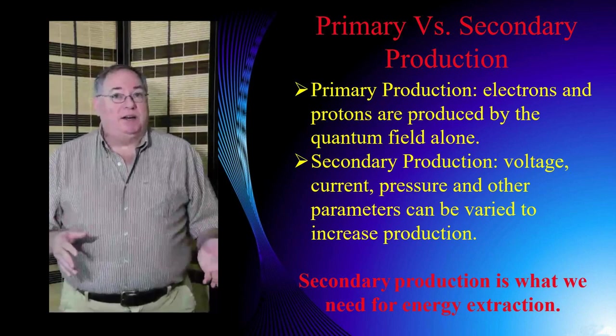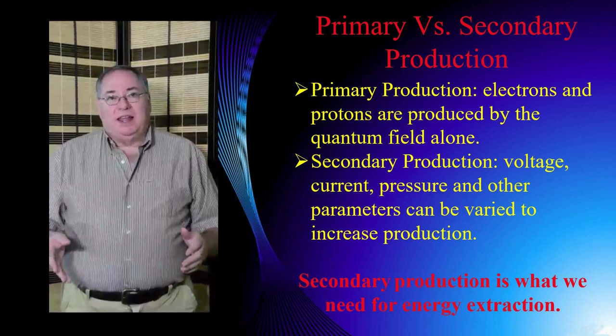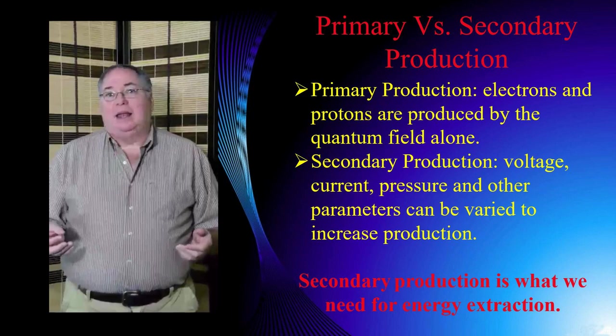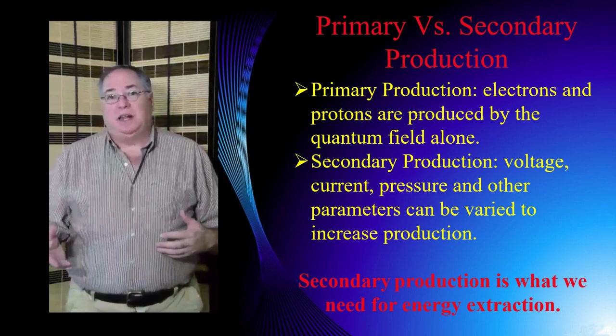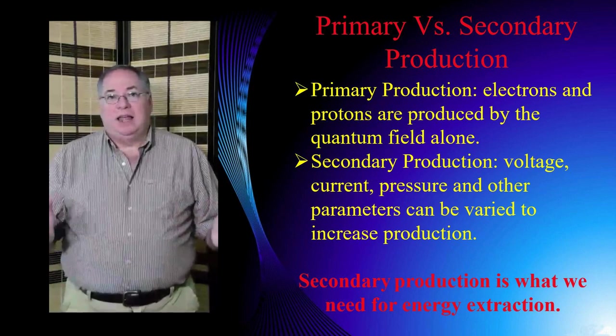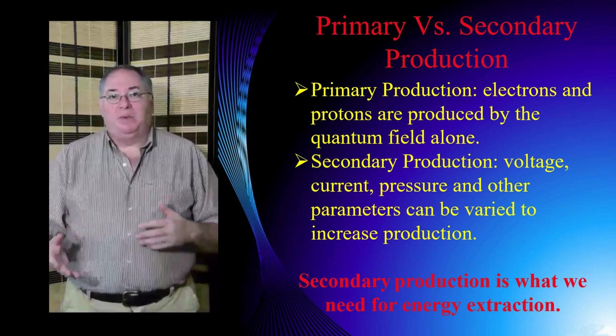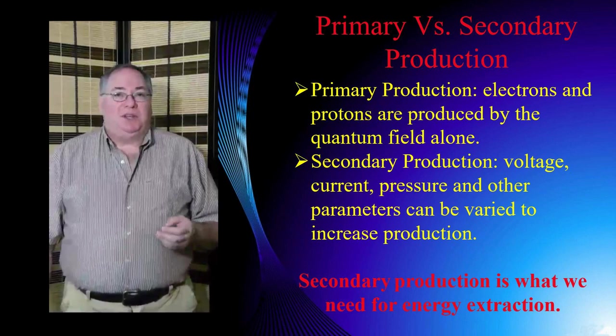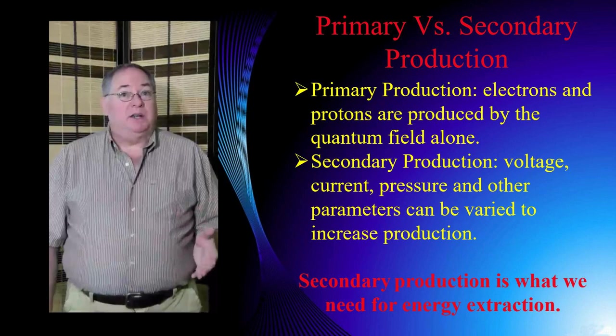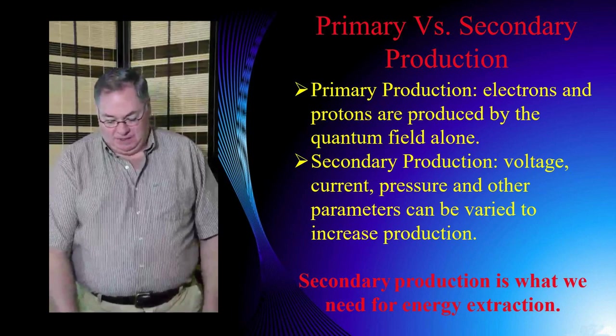Then we have the idea of primary versus secondary production, as I like to call it. In primary production, you can take a region of empty space with nothing but quantum field and have protons and electrons pop out of it. And that would be the most fundamental way that we get proton-electron production. But in secondary production, we would already have particles present and we can change the voltage, pressure, current, type, and other types of parameters and potentially increase the production rate, come up with a slightly different mechanism to make it more efficient. And in terms of energy production, that's what we want. We want a form of secondary production because primary production, whatever the mechanism may be, must be very slow or the universe would be saturated with protons and electrons.